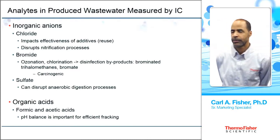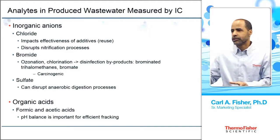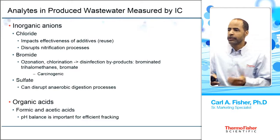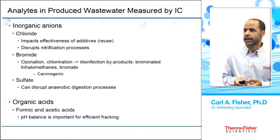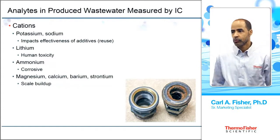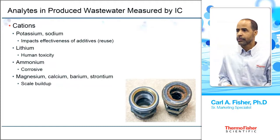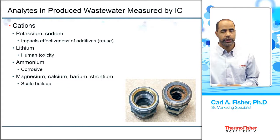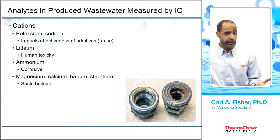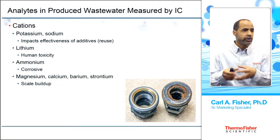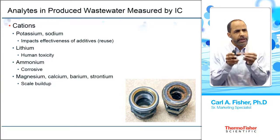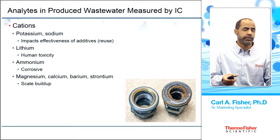Sulfate can disrupt the anaerobic digestion process in downstream water treatment. Organic acids like formic and acetic acid can modulate the pH, which is a really important consideration for efficient fracking. For cations: potassium and sodium can impact the effectiveness of additives. Lithium is toxic to humans. Ammonium is corrosive. And a number of cations can form scale — magnesium, calcium, barium, and strontium — which can occlude the pipes transporting liquids and the fractures you've created, significantly reducing oil and gas recovery.